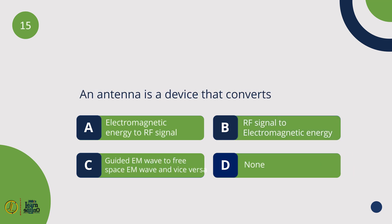An antenna is a device that converts a guided EM wave to a free space EM wave and vice versa.